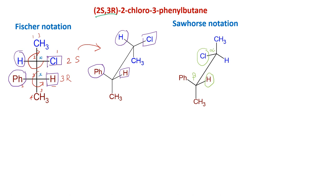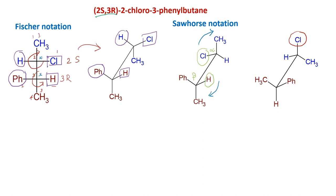To achieve the anti arrangement, we rotate through the Sawhorse: hydrogen comes in place of methyl, methyl goes in place of phenyl. Similarly on the back carbon, chlorine moves in place of methyl, methyl goes in place of hydrogen, and hydrogen goes in place of chlorine. This is how the structure will look after rotation, with all groups having shifted place in a circular manner.